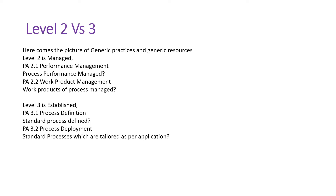Level 2 is about performance management — PA 2.1 — meaning your process performance is managed: are we tracking it, are we adjusting it, are we revising based on expectations? PA 2.2 is about work product management: how you are going to manage the work products. You have to provide a naming convention, version control, access control, reviews in place, a baselining mechanism, and define the complete configuration management plan. Configuration management activities come into the picture in PA 2.2.